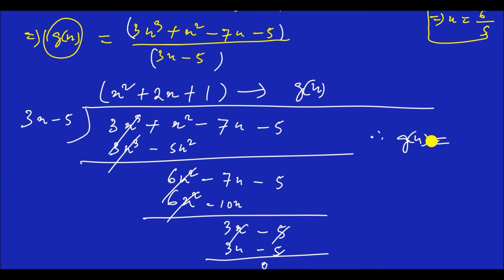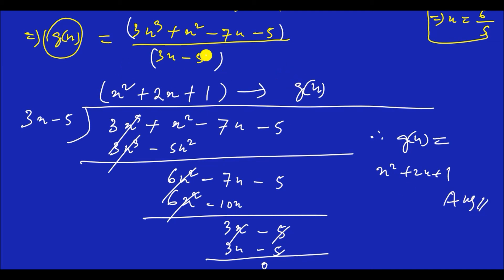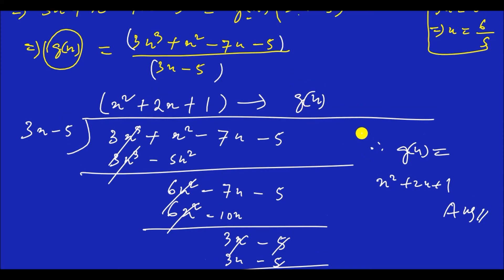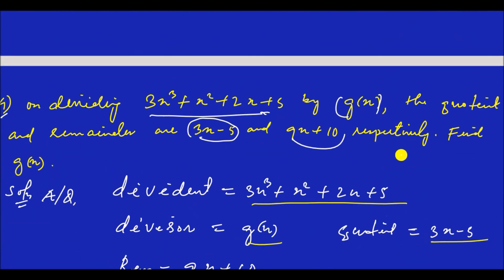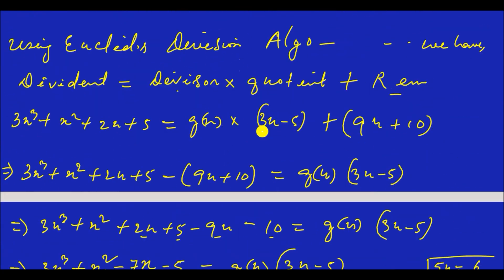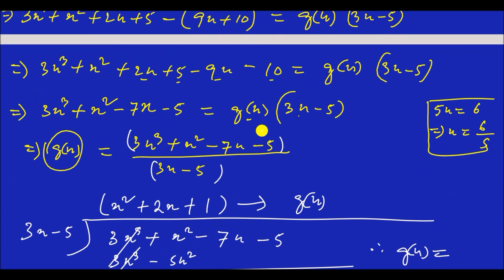Therefore GX equals x² + 2x + 1. That's the answer. GX is the value we needed to find — find the value of GX — and that's the question solved.